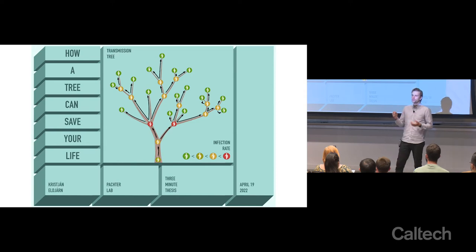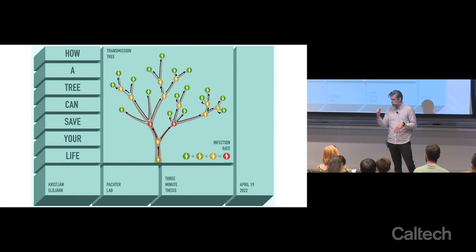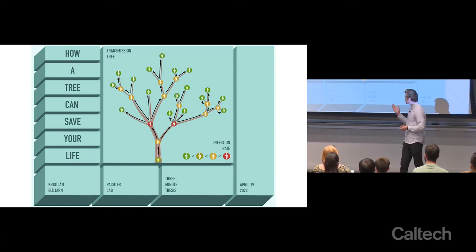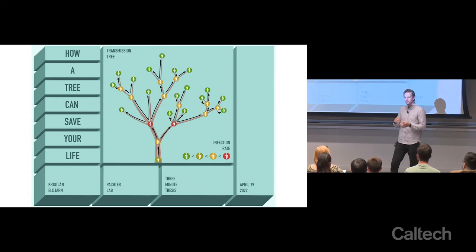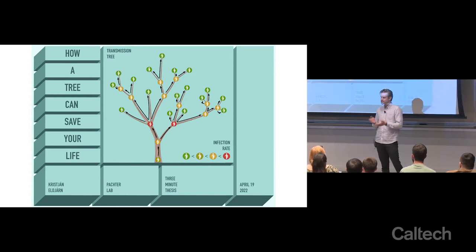Now there are two main things that affect the infectiousness of a virus: the physiology of the virus itself, and the behavior of its hosts. And this tree tells us something about human behavior in a pandemic setting.